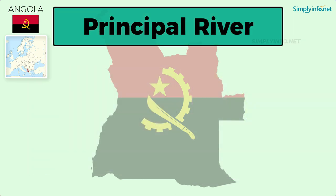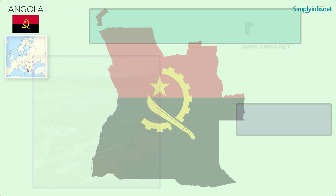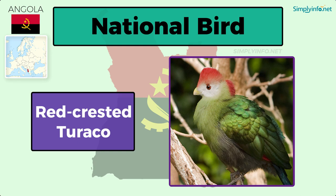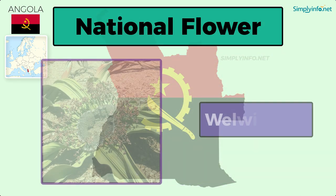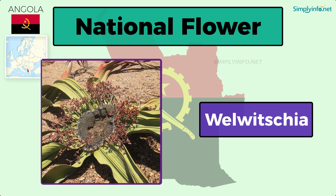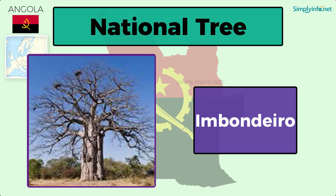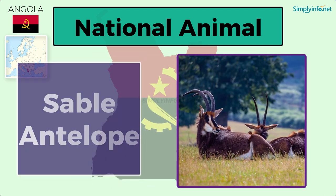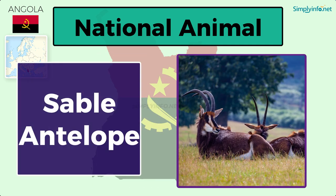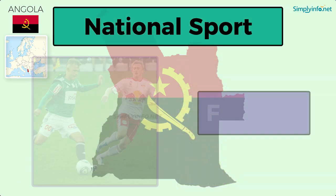Principal river: Kwanza. National bird: Red-crested Turaco. National flower: Velvet Chia. National tree: Imbondeiro. National animal: Sable Antelope. National sport: Football.